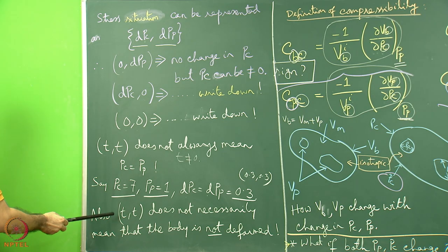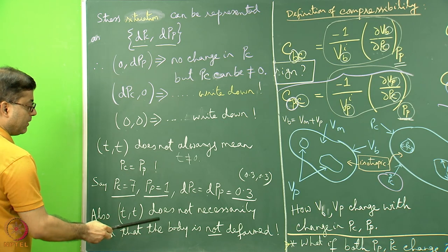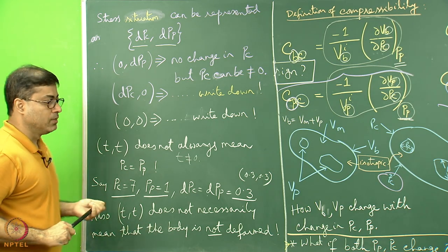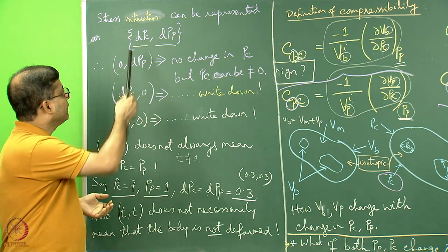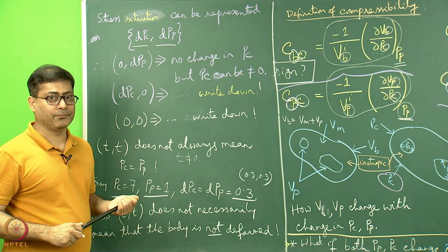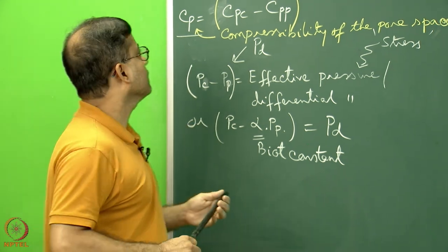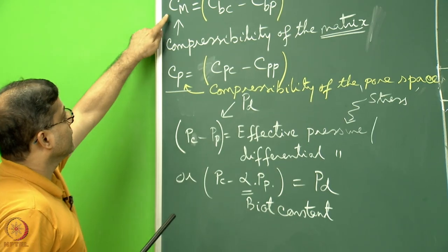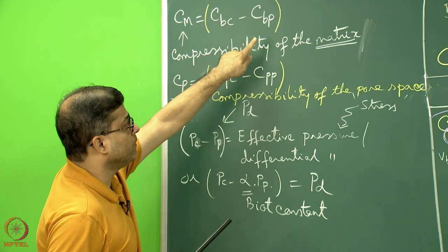Also note that (T, T) does not necessarily mean the body is undeformed. When model questions are set, you will face such cases — understand this well. We will now define a few more parameters. The compressibility of the matrix, Cm, equals Cbc minus Cbp.